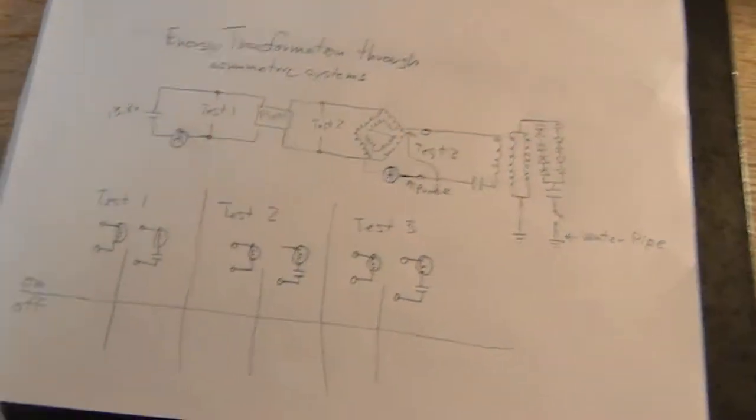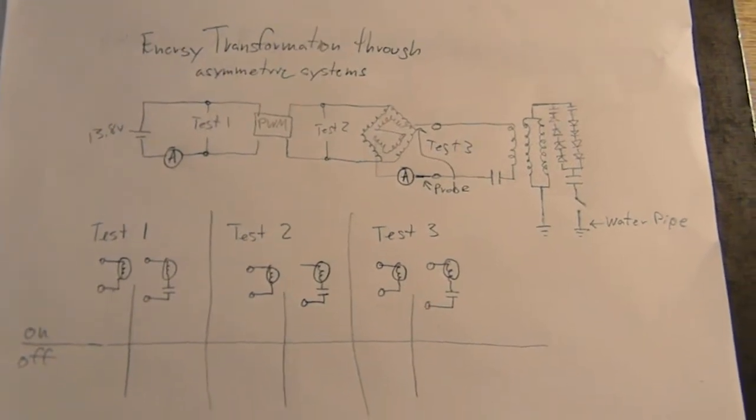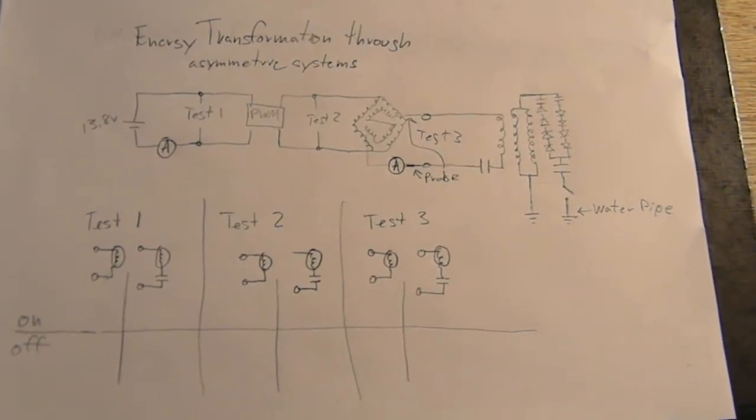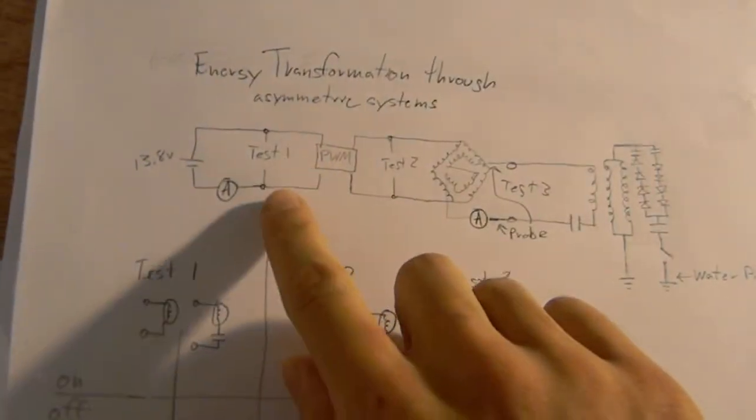Alright, so today we're going to analyze how energy is transformed as it goes through an asymmetric system. We're going to test the different parts of our circuit here.